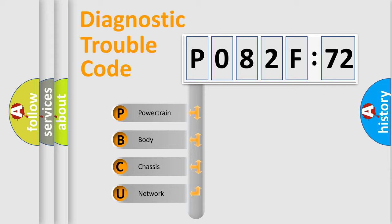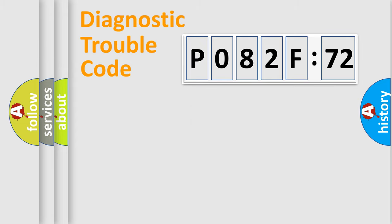If the second character is expressed as zero, it is a standardized error. In the case of numbers 1, 2, or 3, it is a more precise expression of the car-specific error.